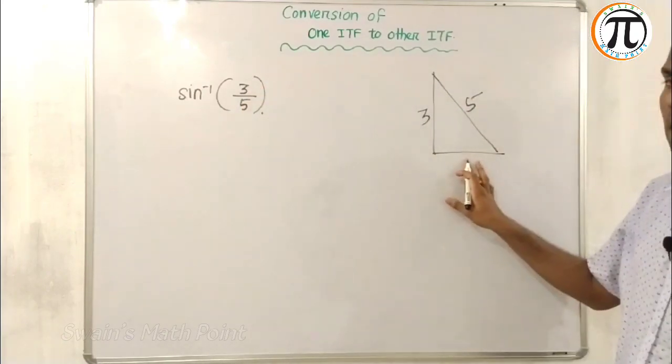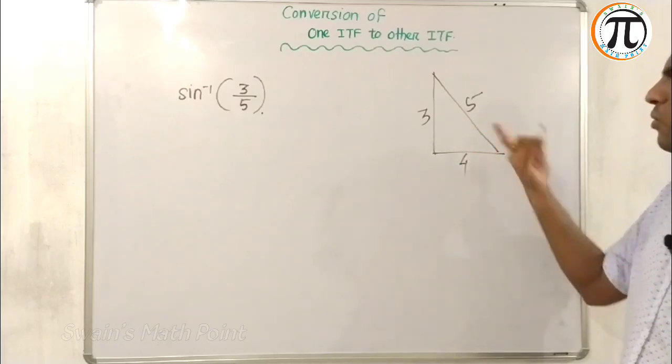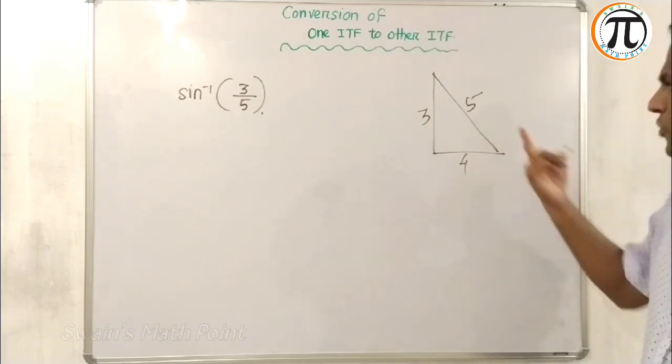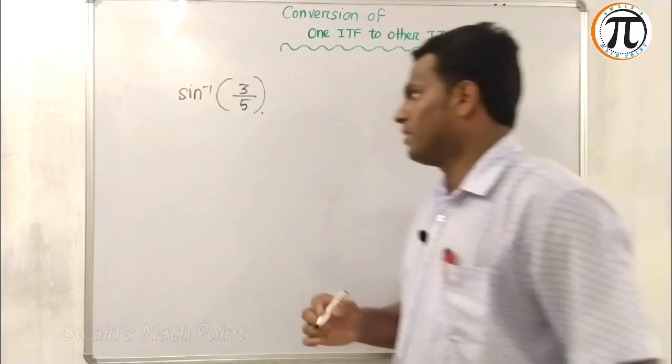So what will B be? Automatically it will be 4. Because 5 squared minus 3 squared equals 25 minus 9, square root is 4.